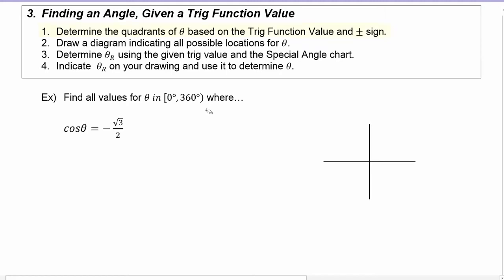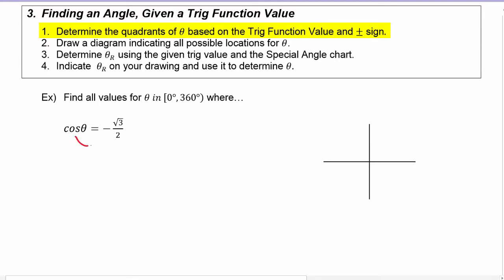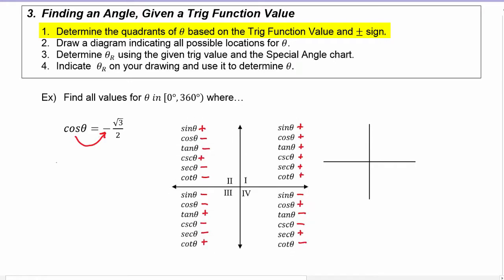Step one: determine the quadrants of theta based on the trig function value and the positive or negative sign. We see we have cosine and it has to be negative. We know cosine is negative in quadrants two and three.